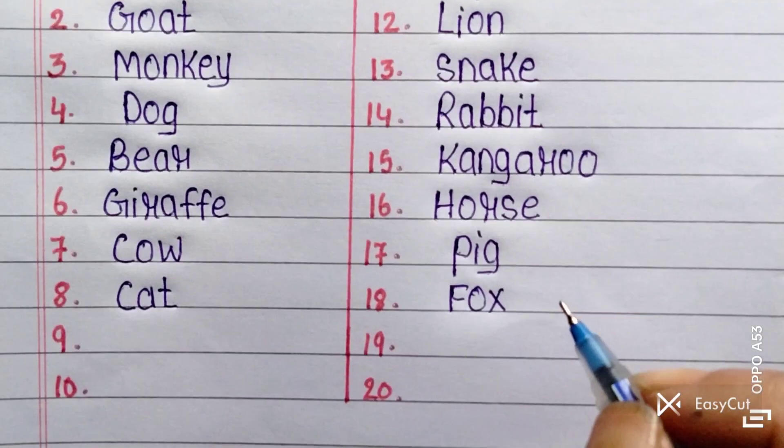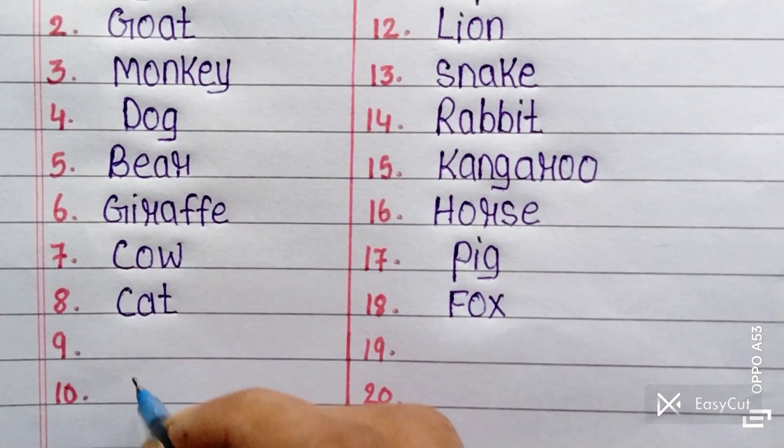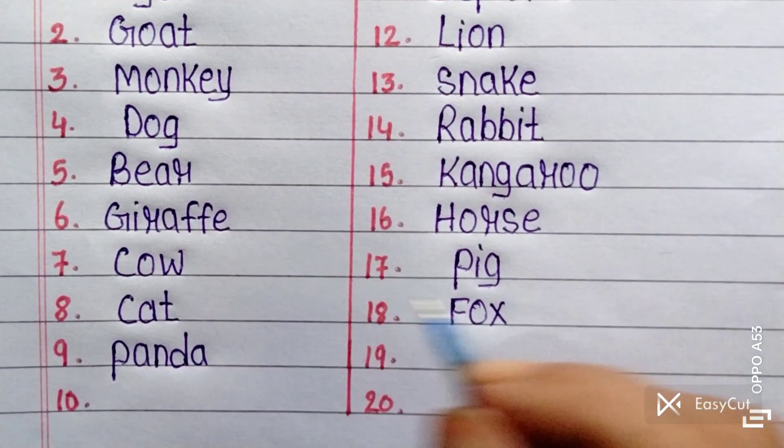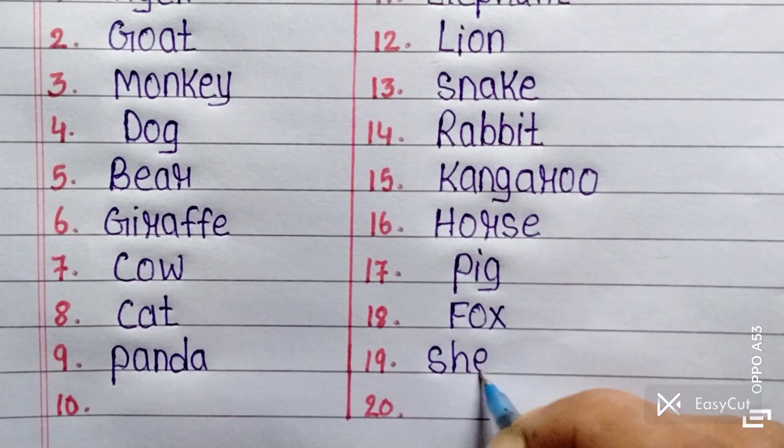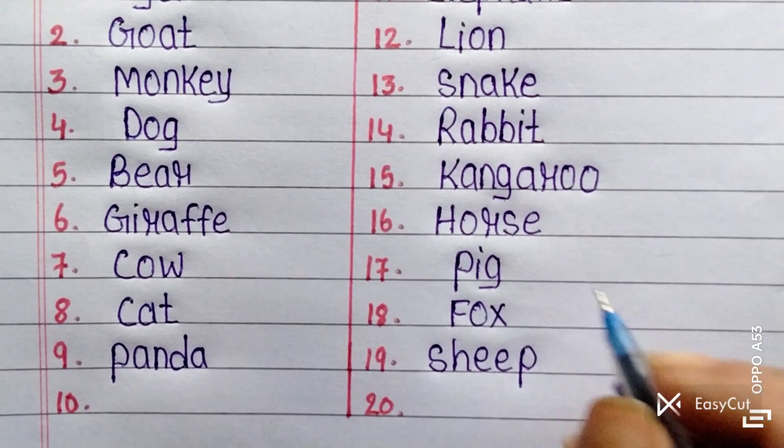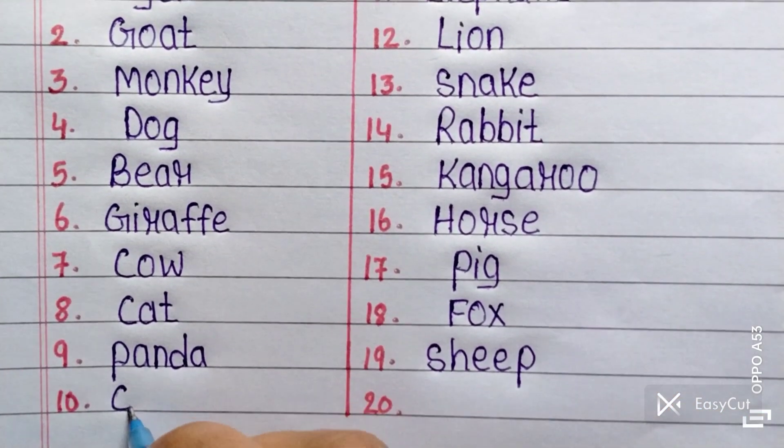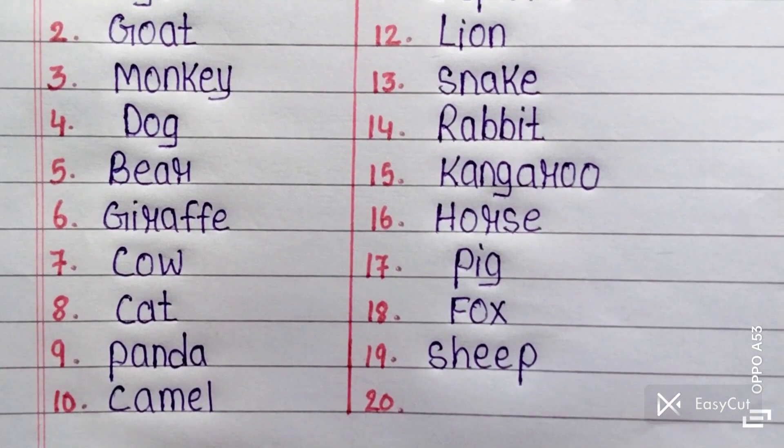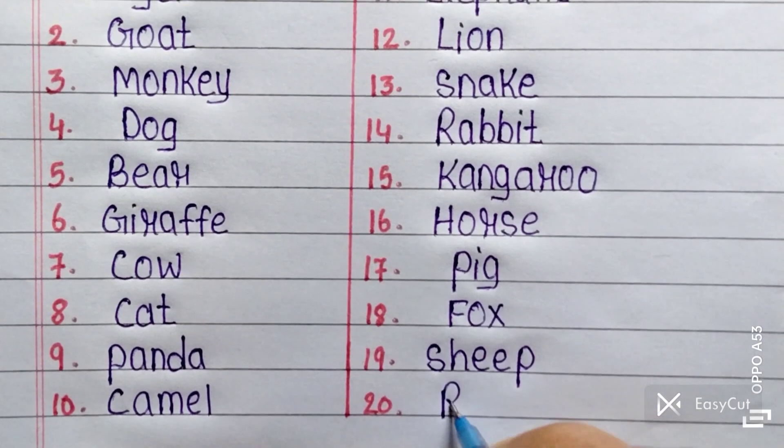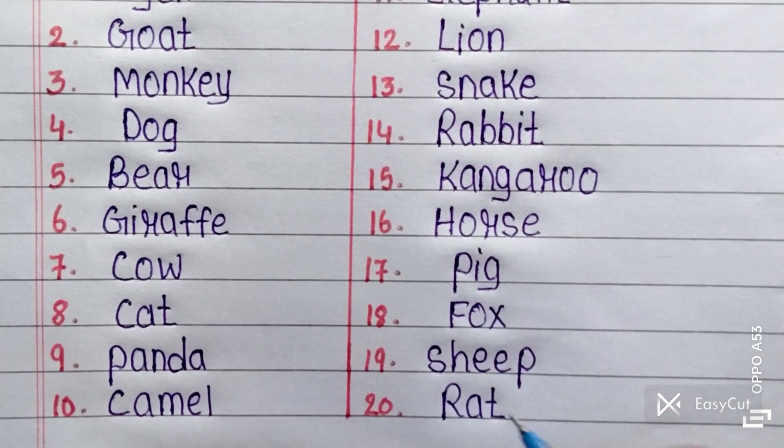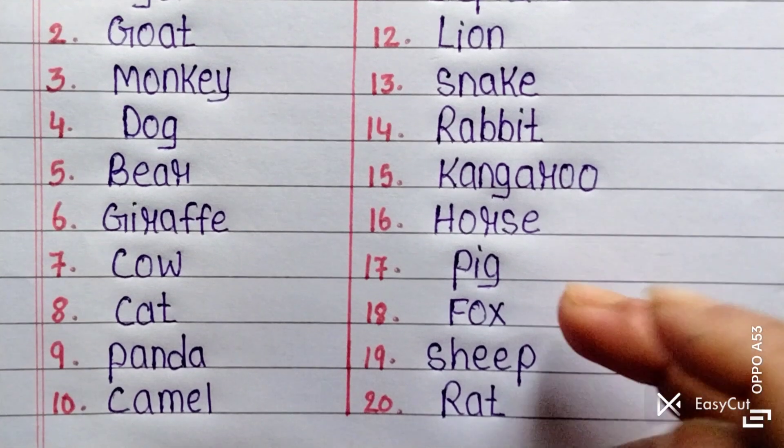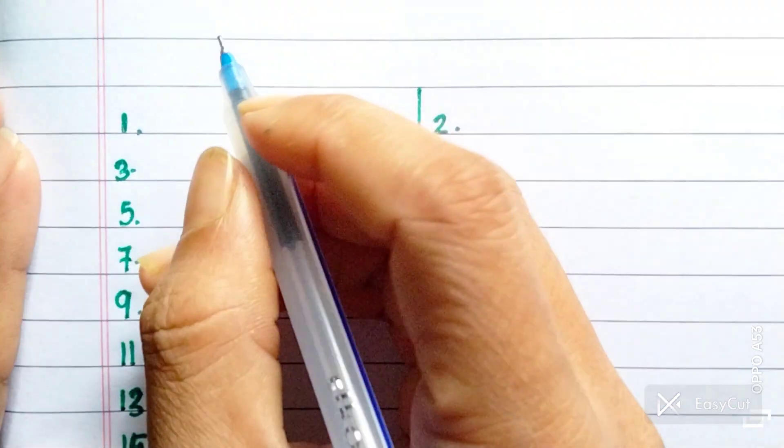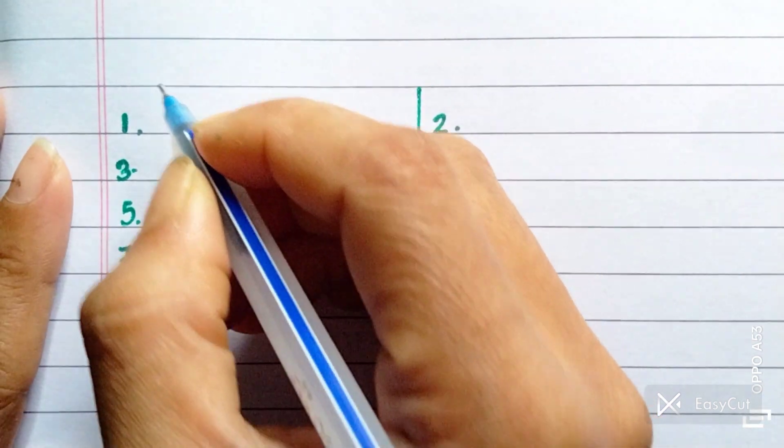Fox, panda, sheep, camel. The last one of the names of animals is rat. These all are the 20 names of animals. Next one is the names of place.